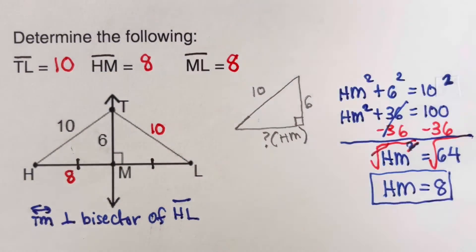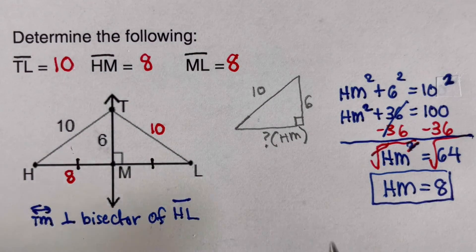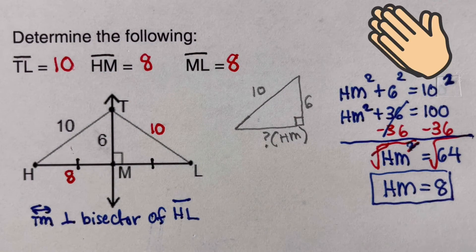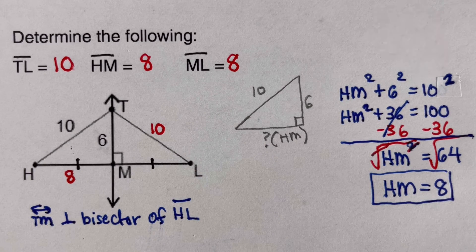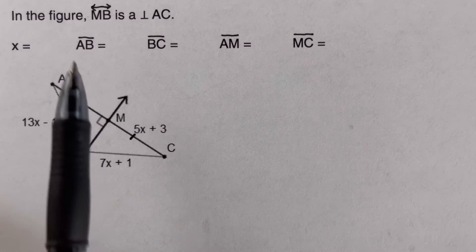Since HL was bisected, ML is equal to HM, so ML is also 8.